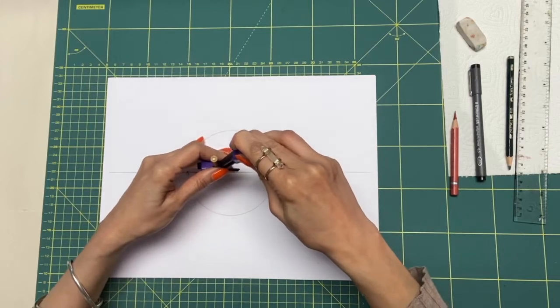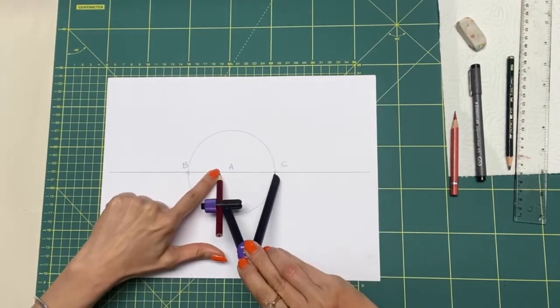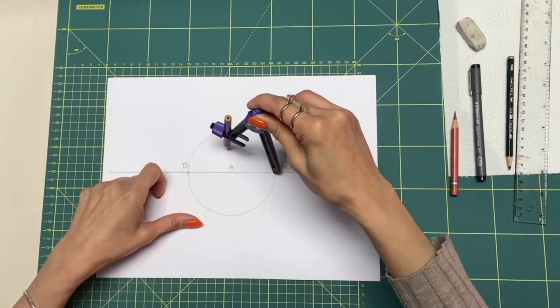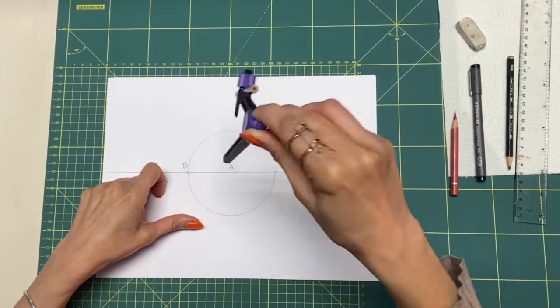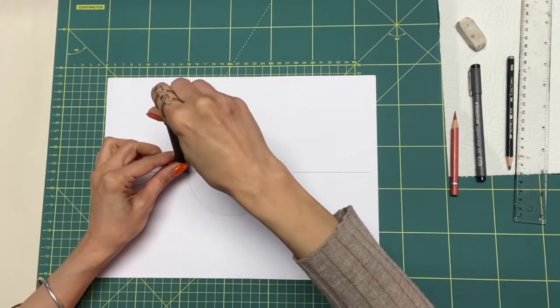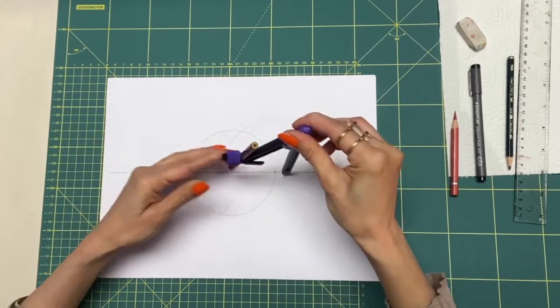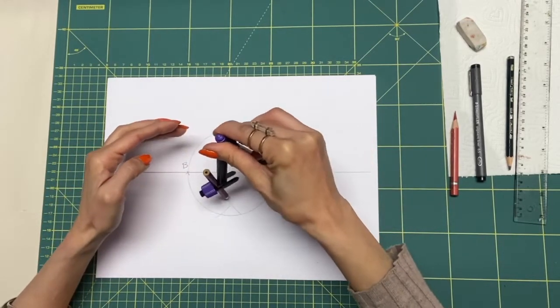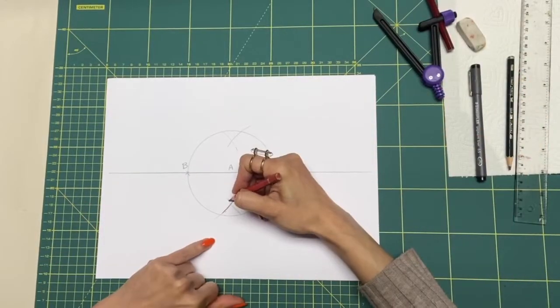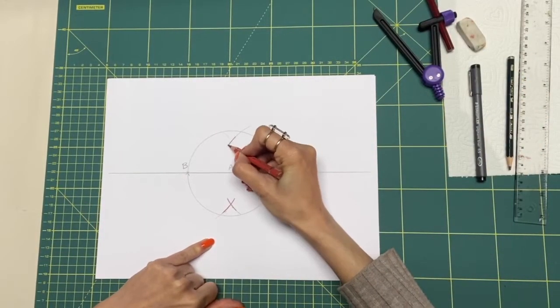Now I open the compass one or two centimeters wider than the radius. From point C as a center, draw one arc on top of the horizontal line and one arc below it. Repeat this with center B.